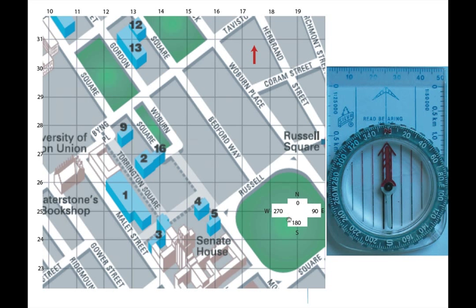I've used Russell Square — the green space there — just to show you the directions of the compass. My previous video, now available on YouTube, shows you the compass directions: north, east, south, west. The way we remember that is 'Never Eat Shredded Wheat.' We can divide a circle into 360 degrees, and that's why 0 is always to the north, 90 degrees to that is east, 180 degrees is south, and 270 is to the west.